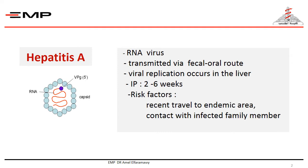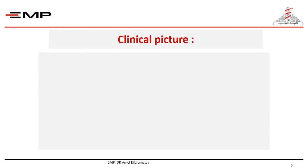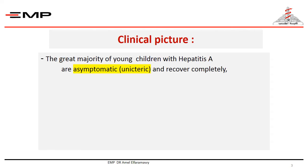The risk factors include recent travel to an endemic area and contact with an infected family member. Egypt is considered an endemic area for hepatitis A. The great majority of young children with hepatitis A are asymptomatic or have mild disease and recover completely.